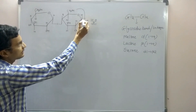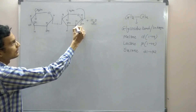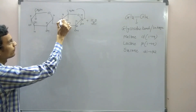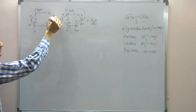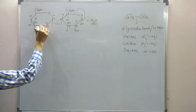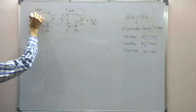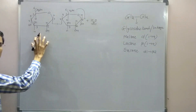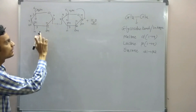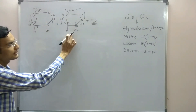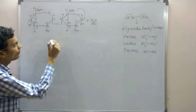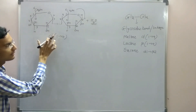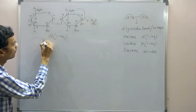Looking at the structure, this is the first carbon of the first glucose molecule, followed by the second, third, fourth, fifth, and sixth carbons. Similarly, the second glucose has its first, second, third, fourth, fifth, and sixth carbons. The bond is formed between the first carbon of one glucose molecule and the fourth carbon of the other glucose molecule, so it is known as an alpha-1-4 bond. This is the structure of maltose.